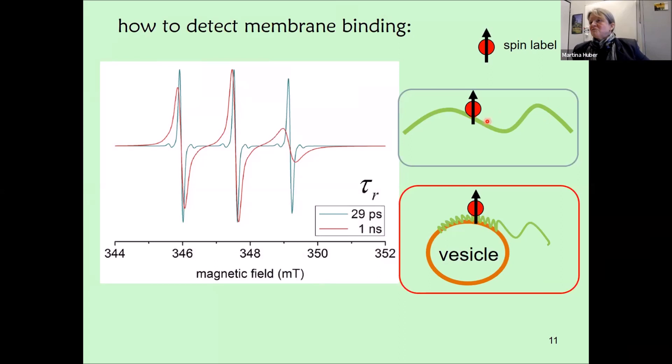How do we use EPR to learn more about this? Here's a cartoon: if our protein is not bound to anything, we'd have a highly mobile spectrum—this blue spectrum with narrow lines. If the part of the protein that the spin label is attached to binds to something, for example a vesicle, the motion would slow down and we'd observe this broader spectrum you can see here in the high field line. That's the observable we're going to use.